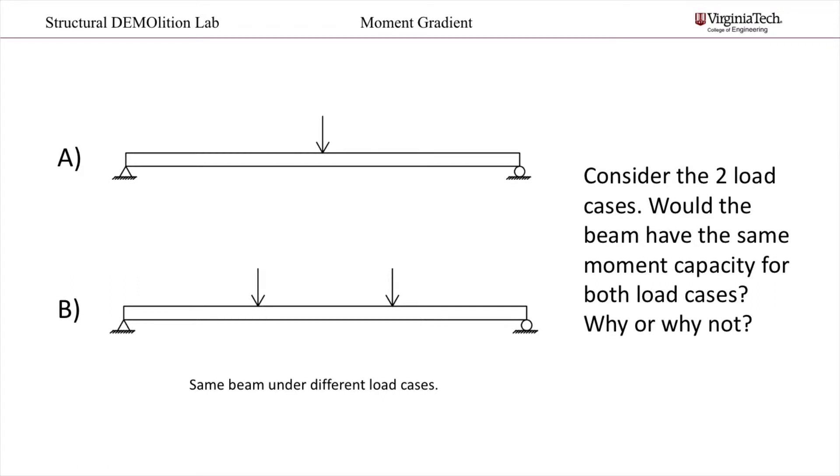Let's take two different load cases. Beam A and beam B are exactly the same beam. However, in case A, the beam resists a single point load. In case B, the beam resists two point loads equally spaced along the beam. Assuming lateral torsional buckling controls, would A and B have the same moment capacity? Why or why not?